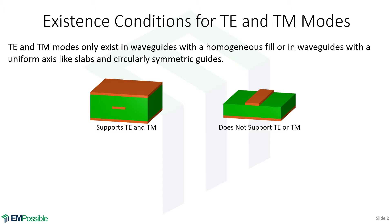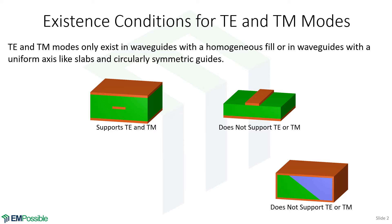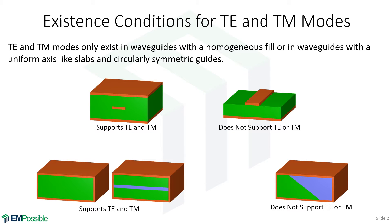It would be very rare that you would actually use it this way, because then it will be a multi-moded transmission line and bad things can happen unless you're doing that on purpose. Then we move into the non-transmission line types of waveguides. This particular structure does not support TE or TM modes because there's an inhomogeneous fill. Looking at two different cases of this rectangular waveguide — one has a perfectly homogeneous fill and the other has a uniform direction — in either case those support TE and TM modes.